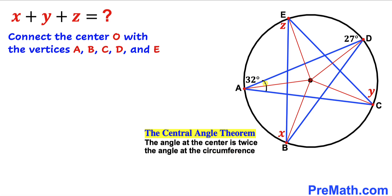Let's focus on angle A. We know this is 32 degrees and it is at the circumference. The corresponding angle at the center is going to be twice this angle, so it becomes simply 64 degrees. Now let's focus on angle B, which is x — this angle is also at the circumference.